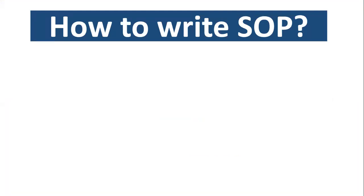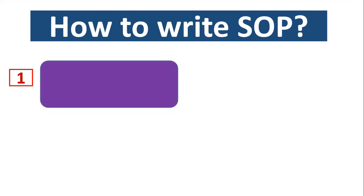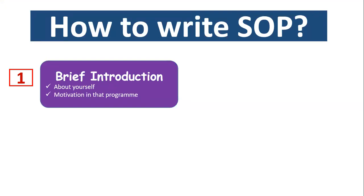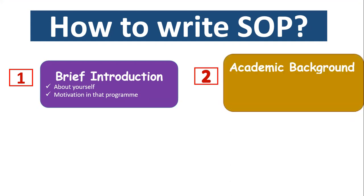Now I will tell you how you can write your own statement of purpose or personal statement. I divided this into four parts — I hope this will help everyone. The first part of your SOP should contain your brief introduction — you can tell about yourself, who you are, and where you are from. The second thing in the introduction is your motivation for that program. The second part of the SOP should be your academic background, where you can discuss your current and previous degrees. You can also tell about your accomplishments — what you have achieved so far. This second part of the SOP is the most important part of your statement of purpose.